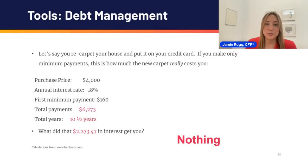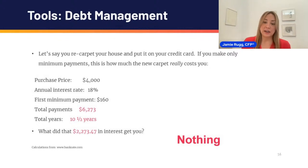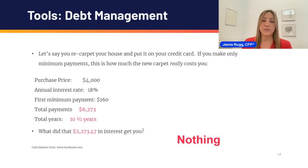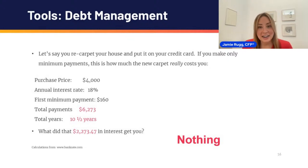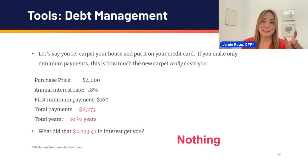The carpet costs $4,000. The interest rate is 18% — and right now interest rates are north of 20-21%, up to 27-28%. The first minimum payment in this example is $160. Over the course of paying back these minimum payments, the total payments are $6,273 and it takes 10 and a half years to pay off that $4,000. That $2,273.47 in interest you paid to the bank gets you absolutely nothing. If you ever look at the very back of your credit card statements, they're required to tell you how long it will take to pay off your balance with only minimum payments.